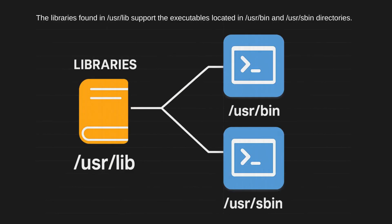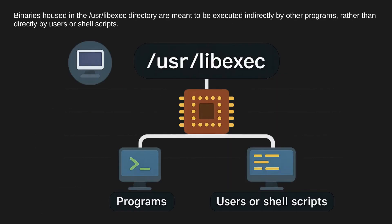The libraries found in /usr/lib support the executables located in /usr/bin and /usr/sbin directories. Binaries housed in the /usr/libexec directory are meant to be executed indirectly by other programs rather than directly by users or shell scripts.